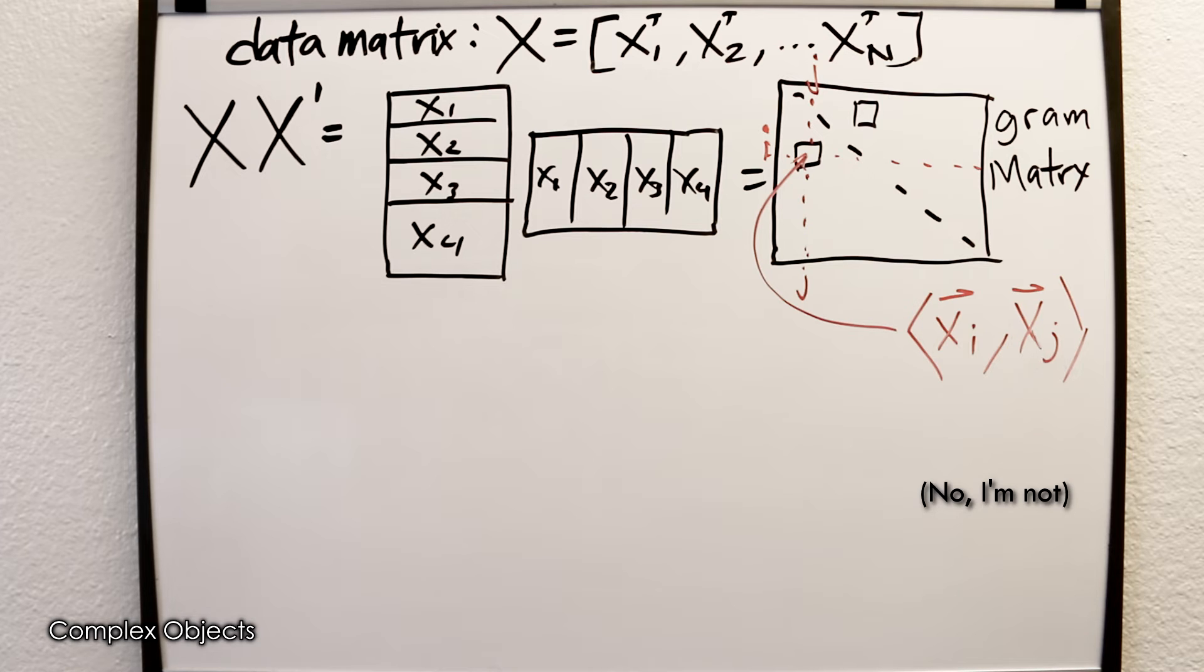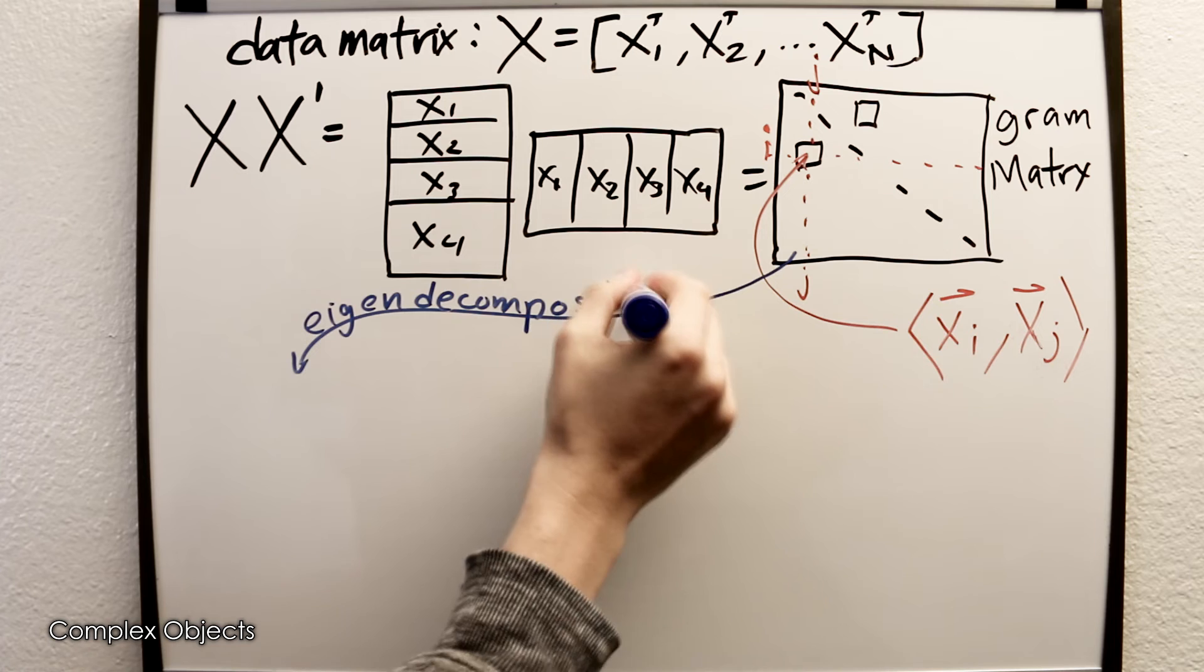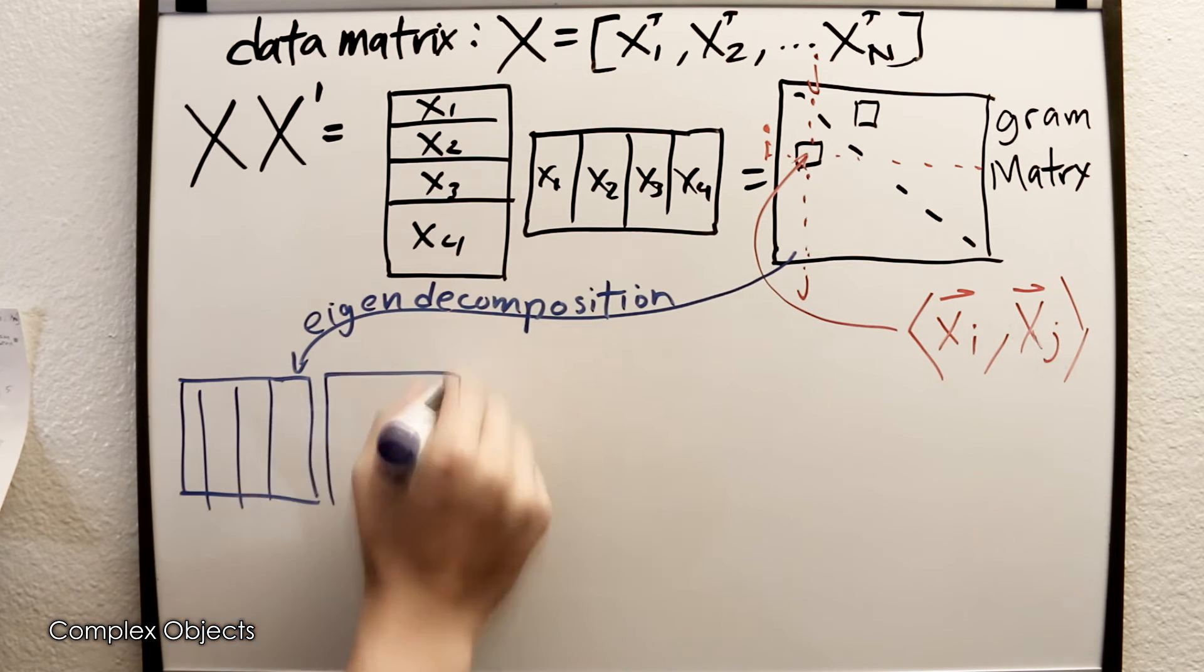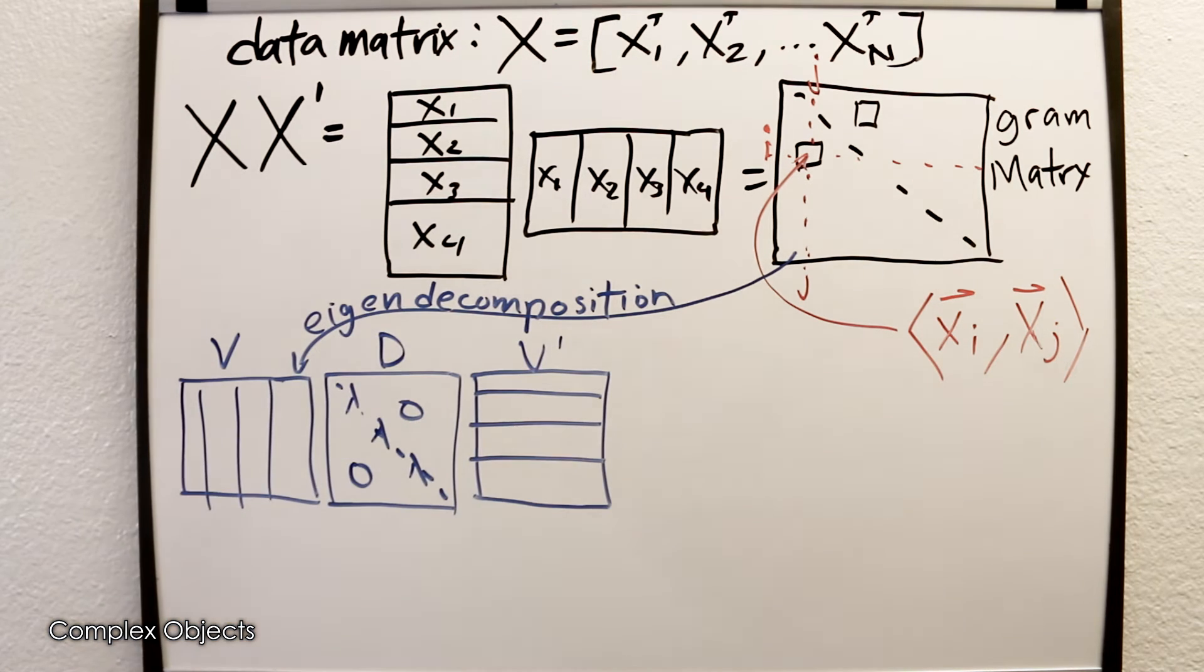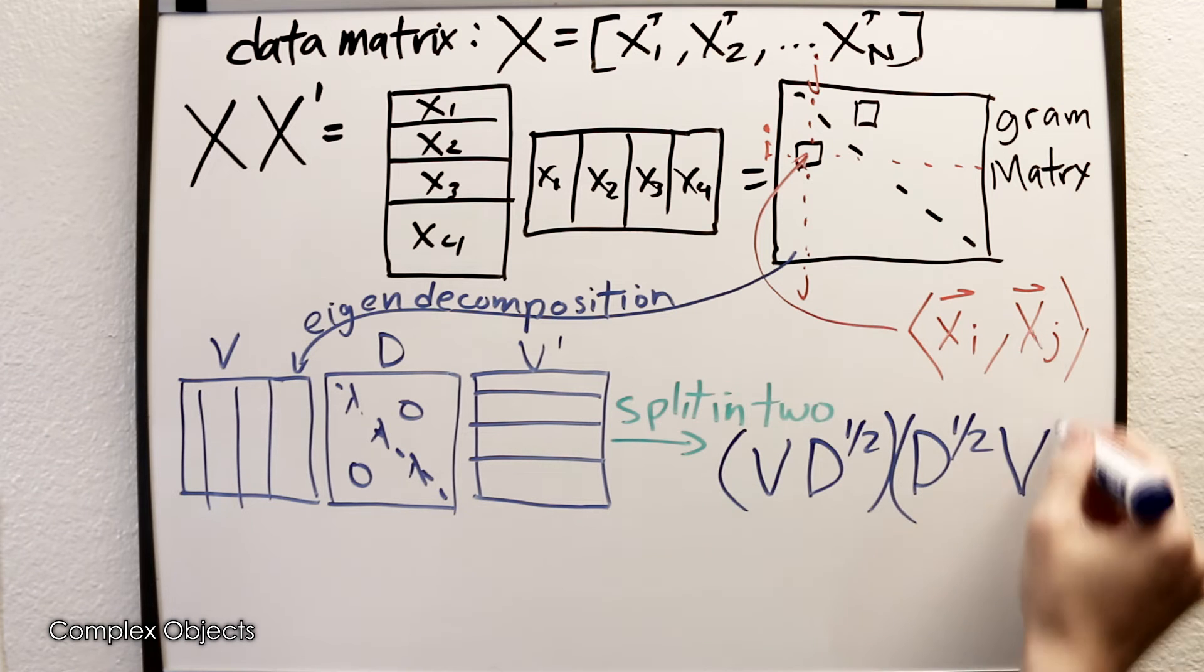If we imagine taking an eigen decomposition of this, which is also a symmetric matrix, and we get VDV transpose, then if we split that product in half into two pieces, it might be the case that one of those pieces is like the original two pieces that we began with.